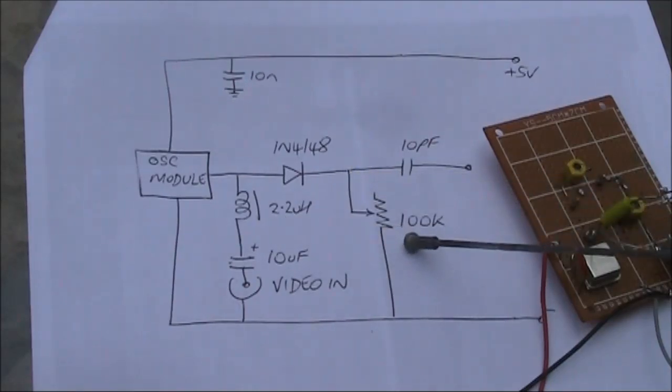On the cathode side of the diode is a 100k potentiometer. Adjust that for best picture quality, though there may be settings where you've got no picture at all. The output, as before, is taken via a 10 pF capacitor.